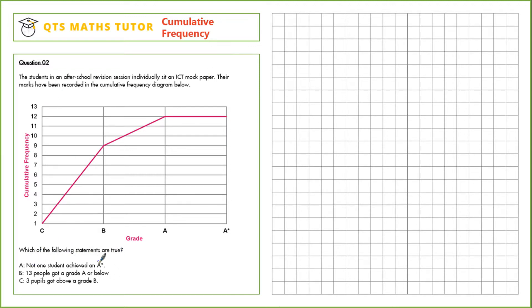A: Not one student achieved an A star. If we look at the curve here we see that from A to A star the cumulative frequency graph does not increase. There are 12 students that up to now have got at least a grade C or above, and then there are 12 students that have got a grade C or above. So no students got a grade A star, so this is true.